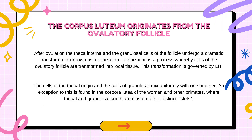After ovulation, the theca interna and the granulosa cells of the follicle undergo a dramatic transformation known as luteinization. Luteinization is a process whereby cells of the ovulatory follicle are transformed into luteal tissue. This transformation is governed by LH.